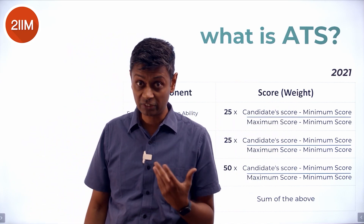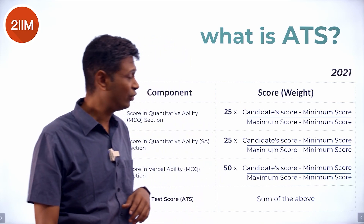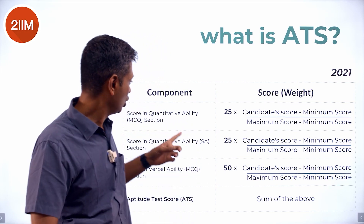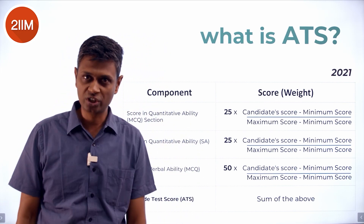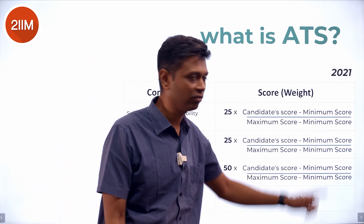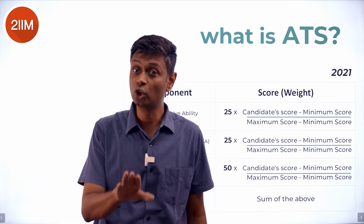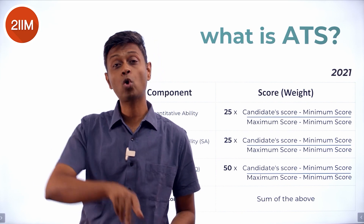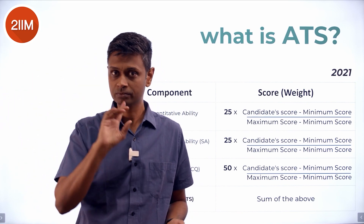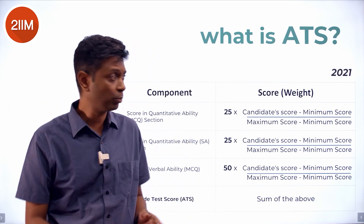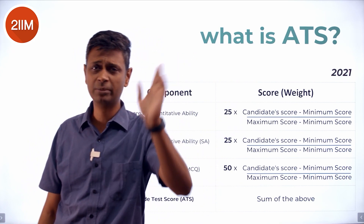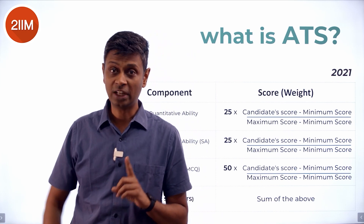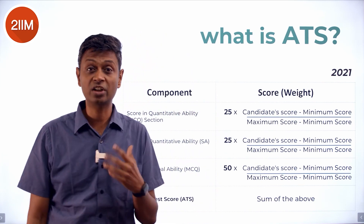What they are saying conceptually is: if you're the person who got the minimum score — the person who just cleared the cutoff in the quantitative ability MCQ section — then this number will be 0. So you've cleared the cutoff, but the contribution from that section to your overall ATS is 0. At the other extreme, if you scored the maximum, then (maximum − minimum) / (maximum − minimum) = 1, meaning you get the full 25 out of 25 points for that section.